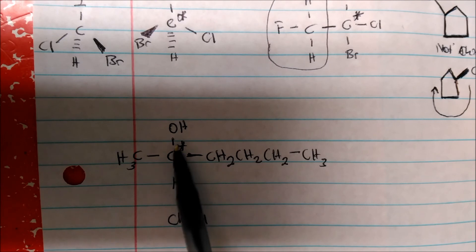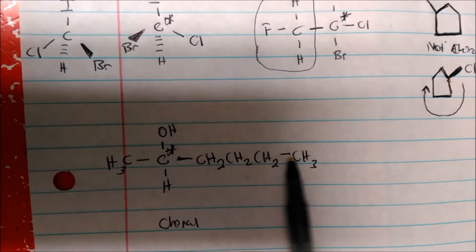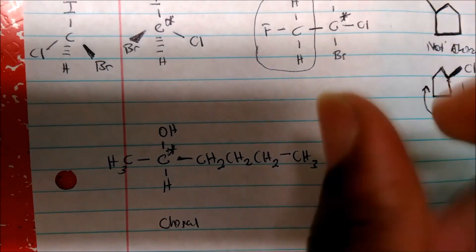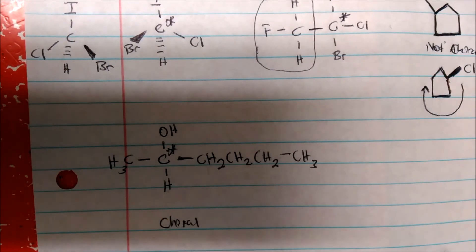So, again, you can just view the carbon as being in the middle. And if you're about to switch the butyl over here, the methyl over here, and kind of twist the atom, there's no way they'll end up the same. And that's what we're going to talk about in enantiomers.